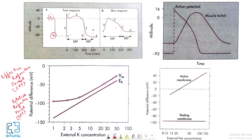The action potential recorded from a slow response cardiac fiber, compared with the fast response fiber: the resting potential of the slow fiber is less negative, the upstroke toward zero of the action potential is less steep, the amplitude of the action potential is smaller, and the relative refractory period extends well into phase 4 after the fiber has fully repolarized.